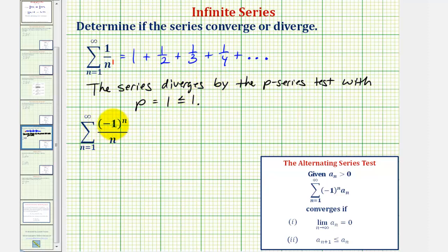And looking at the next infinite series, notice how this would be the alternating harmonic series, where when n equals one, we would have negative one, plus when n is two, we'd have positive one-half. When n is three, we'd have negative one-third, and so on.